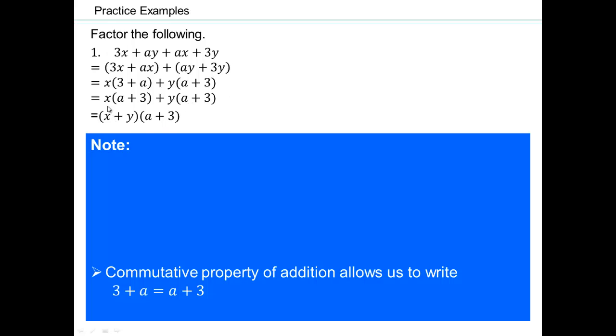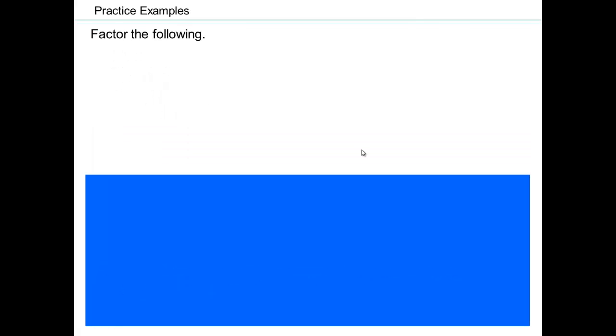OK. So here we have four terms. Sometimes you have to rearrange the terms so that you can pull factors out. So the final answer is x plus y times a plus 3. This is the process of factor by grouping. All right. You try this problem on your own. Pause the video here and continue.